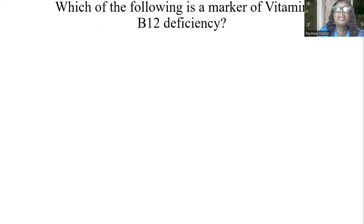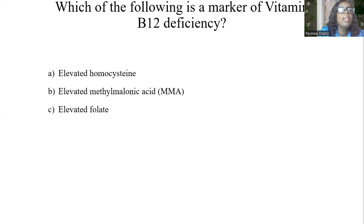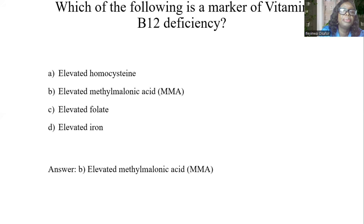Which of the following is a marker of vitamin B12 deficiency? A, elevated homocysteine. B, elevated methylmalonic acid. C, elevated folate. D, elevated iron. And the answer is B, elevated methylmalonic acid.